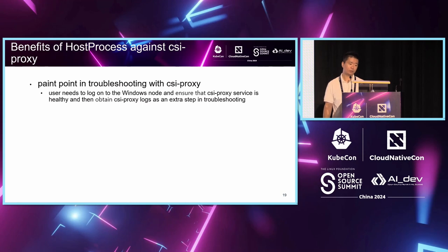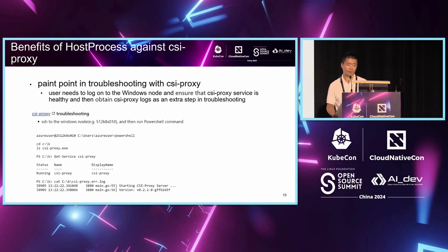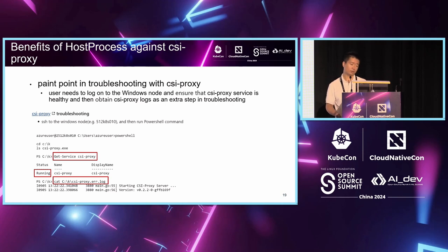The second benefit is about the pain points in troubleshooting with the CSI proxy. Before, if a user had an issue with the CSI proxy, they needed to access the Windows nodes, ensure the CSI proxy service is healthy, and then get the logs — for example, running 'get-service' to make sure CSI proxy is in a running state, then running a 'catch' command to get logs. In some scenarios, the customer may not have direct access to Windows nodes, making troubleshooting more complicated. With the host process container, you only need to use a command like 'kubectl logs' to get the CSI driver logs. That's quite simpler compared to the CSI proxy-dependent approach.